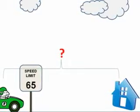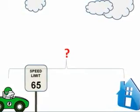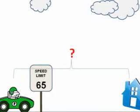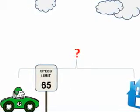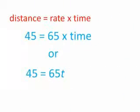I can use the distance formula to figure out how long it will take me to drive 45 miles home at 65 miles per hour. Plugging into the formula, distance equals rate times time, I get 45 equals 65 times time, or 45 equals 65T.